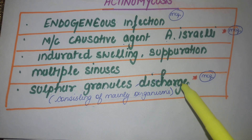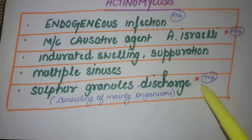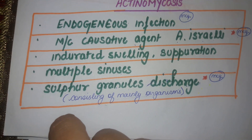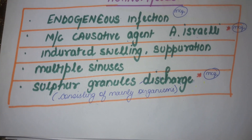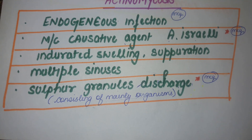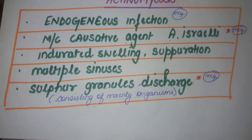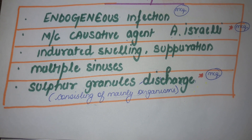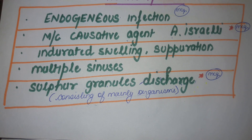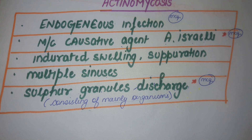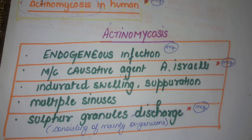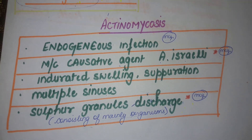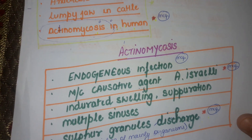MCQ has come in previous papers, so mark it. These sulfur granules consist primarily of the organisms. This is the main feature of Ectanomycoses.